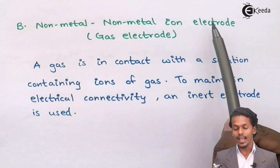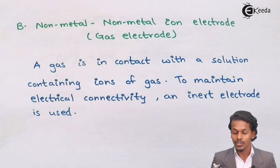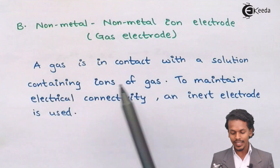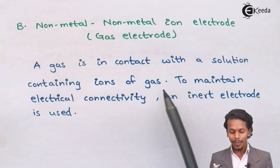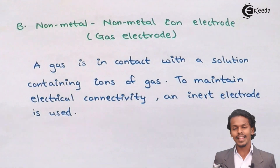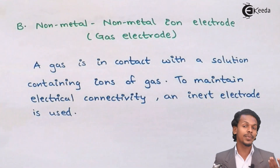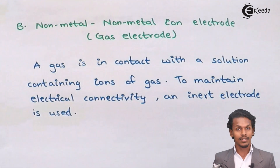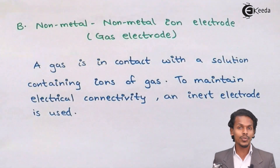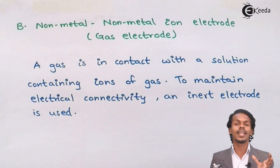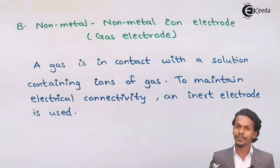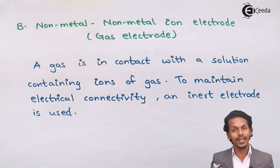The second type is the non-metal non-metal ion electrode, basically known as gas electrodes. A gas is in contact with a solution containing ions of that gas. Since gases do not conduct electricity and cannot be used directly as an electrode, an inert electrode is used to maintain electrical connectivity, with the gas deposited on it.